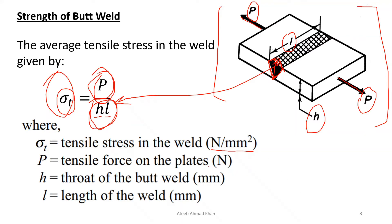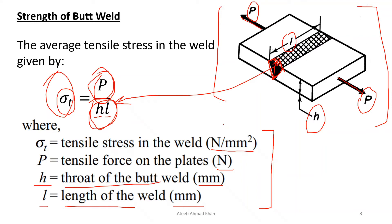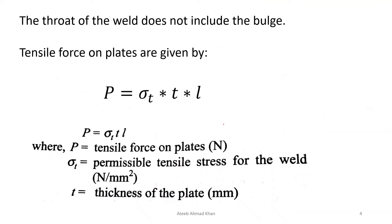P is the tensile force on the plate in newtons; H is the throat of the butt weld — the height of the plate — given in millimeters; and L is the length of the weld, also in millimeters. Be careful with units and try to be consistent, otherwise you will get a wrong answer. The throat of the weld does not include the bulge; this is to compensate for any flaws in the weld.